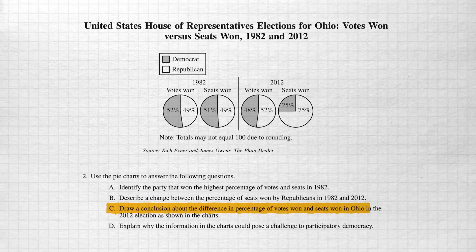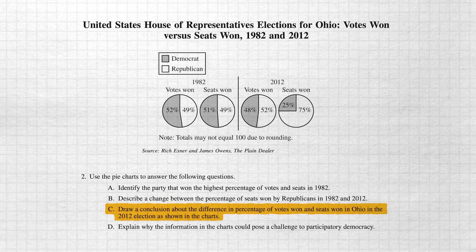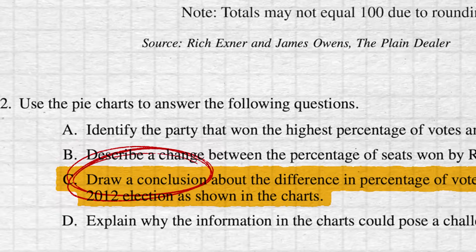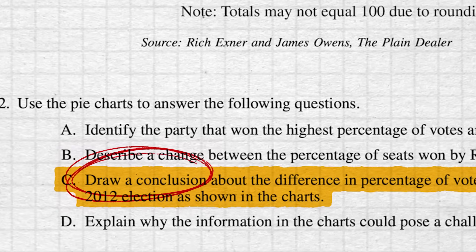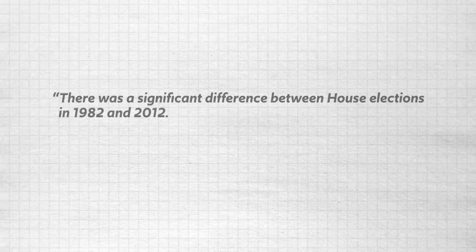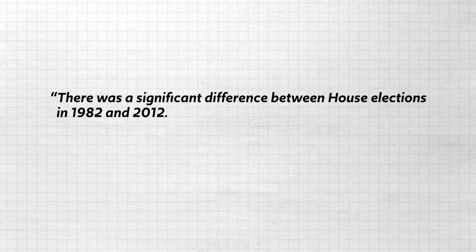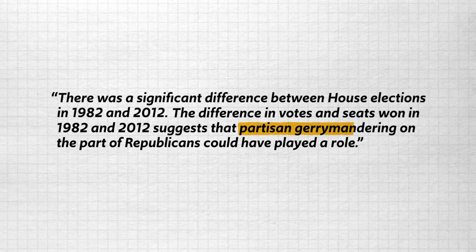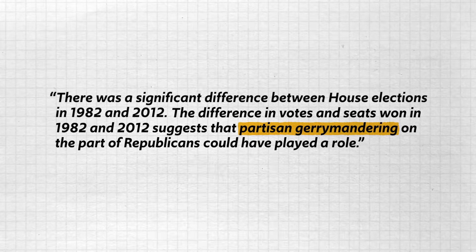Now that your confidence is disproportionately high, they're about to bring you back to earth. You're going to need your brain for parts C and D, which ask for an explanation of those changes. Part C says: 'Draw a conclusion about the difference in percentage of votes won and seats won in Ohio in the 2012 election as shown in the charts.' When the AP overlords say 'draw a conclusion,' they want you to tie all the evidence together and provide an explanation. First sentence: 'There was a significant difference between House elections in 1982 and 2012.' Now explain why: 'The difference in votes and seats won in 1982 and 2012 suggests that partisan gerrymandering on the part of Republicans could have played a role.' You drew a conclusion and explained a potential cause.